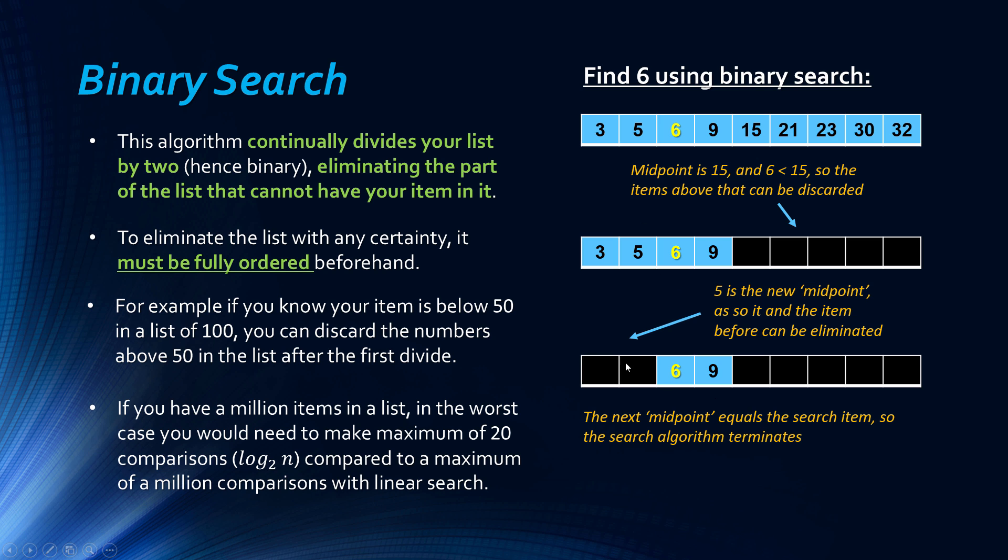And so we find it, and we can ignore nine, and we're left with six being our item. So hopefully you can see what's been done there. It's very efficient compared to linear search, but it has to be ordered beforehand.